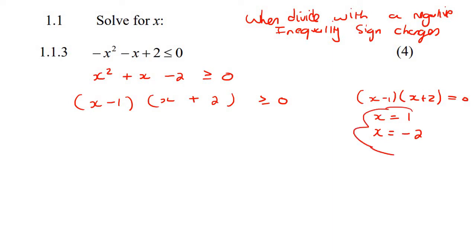Now those two numbers, we call these the critical values. These two numbers are now going to go on your number line. So you're going to draw a number line, and from left to right, the minus 2 is on the left and the 1 is on the right. Why? Because minus 2 is smaller than 1.